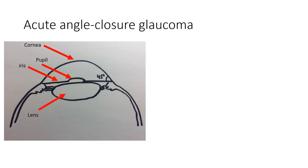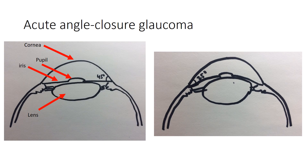In some eyes the lens is bigger than average and located more anteriorly, as seen in the figure on the right. This combination of lens size and location pushes the iris forward, leading to a shallower anterior chamber and a narrower angle opening — in this example only 25 degrees. As a person ages, the lens grows fatter, which can lead to narrower angles.